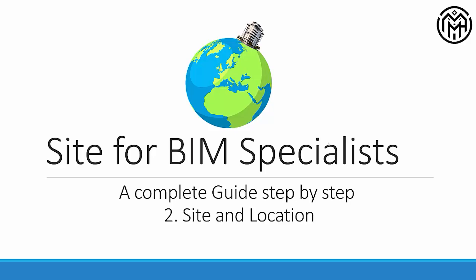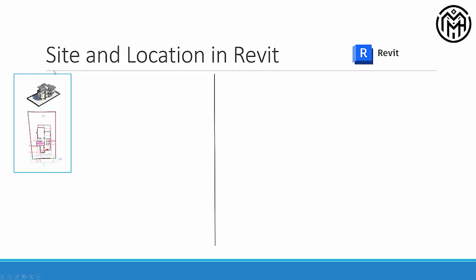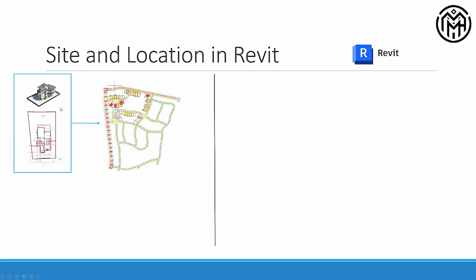Let's start with some theoretical information before we jump into Revit and understand exactly what is the difference between site and location inside Revit. We all remember this layout from the previous video — the layout for this house — and we know this layout is part of a bigger layout, which is the neighborhood layout for this project. When we are talking about the location of our building relative to the surroundings on the same layout, like to different houses, roads, or infrastructure, that relationship between those locations is what we call site.